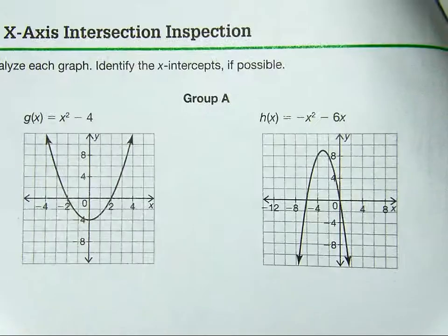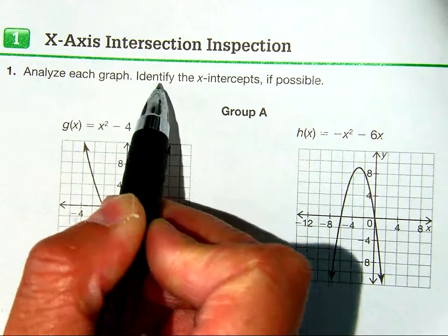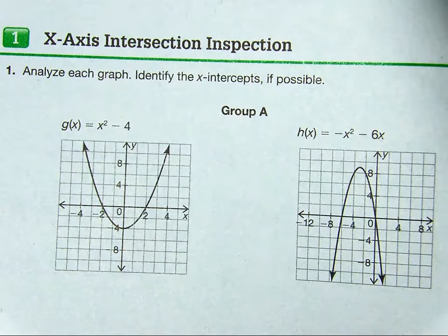Analyzing and identifying the x-intercepts if possible. What is an x-intercept? An x-intercept is where it crosses the x-axis.